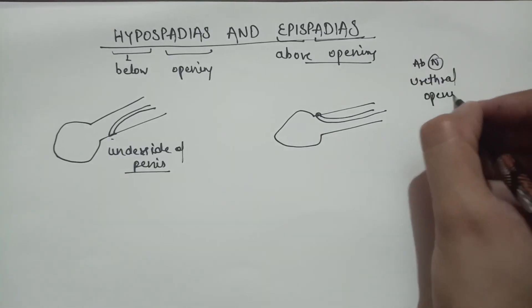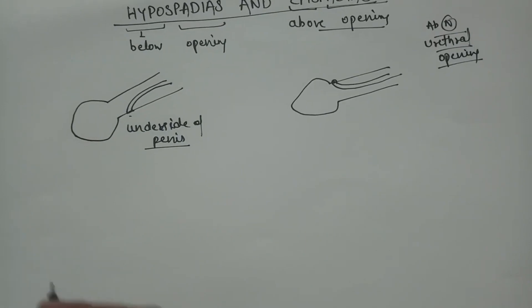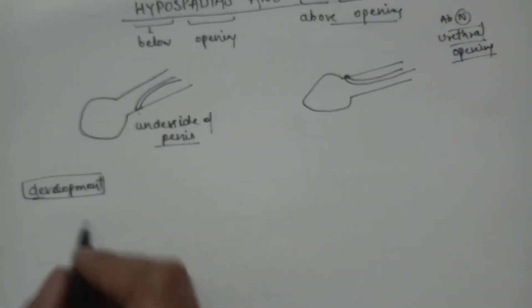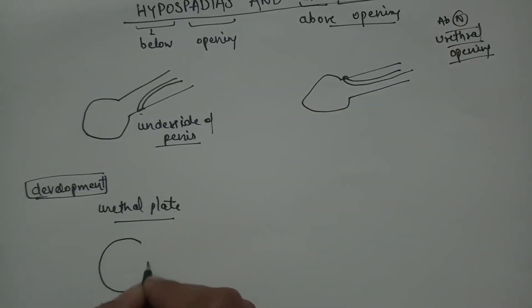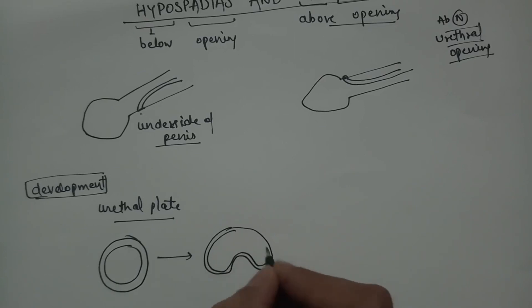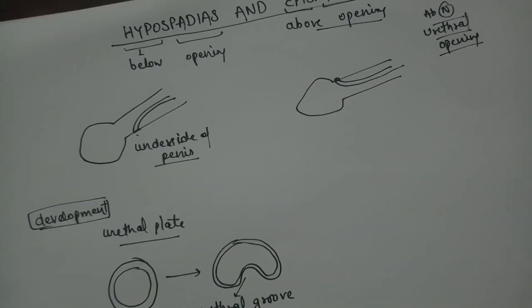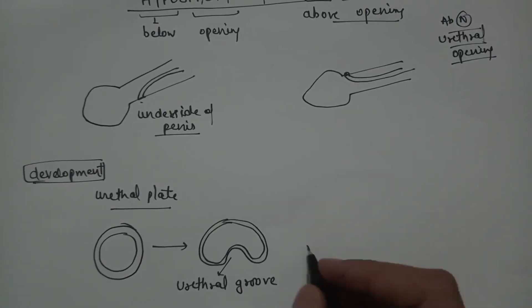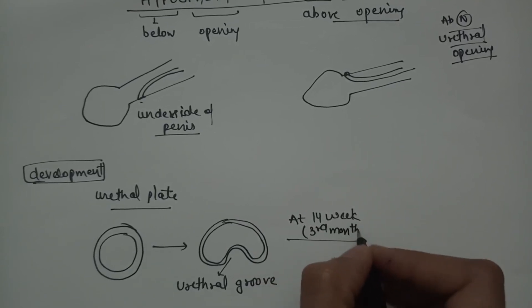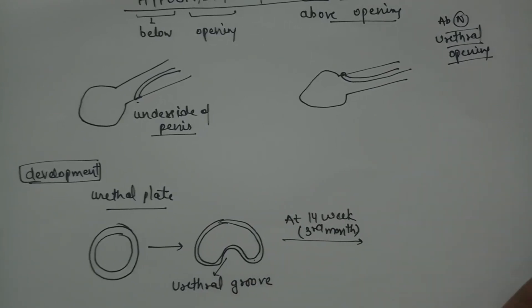Now let's see the development of penile urethra. The penile urethra develops from the urethral plate. This urethral plate invaginates and forms the urethral groove. At around 14 weeks, or the third month, these two ends fuse and canalization occurs.